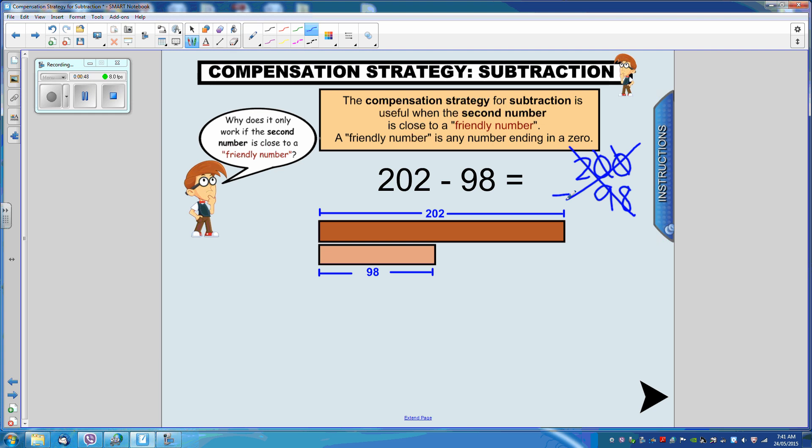Okay, so the second number in this one is 98. And in order to make that a friendly number, we're going to add 2 to turn it into 100. Now let's have a look at this bar diagram to help us understand how we're going to do this. So if I'm going to add 2 to the 98, it's easy to see with the bar diagram that we're going to have to do the same to the top number in order to make those bars equal.